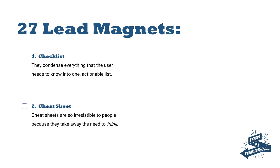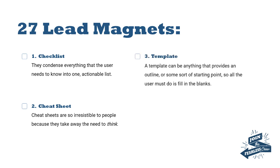Number two is a cheat sheet. Cheat sheets are irresistible because they're positioned in such a way that people don't really have to think too hard in order to action them. There's no such thing as a free lunch — they will still have to do something — but it just makes the whole process much easier for the prospect and hopefully delivers faster results.